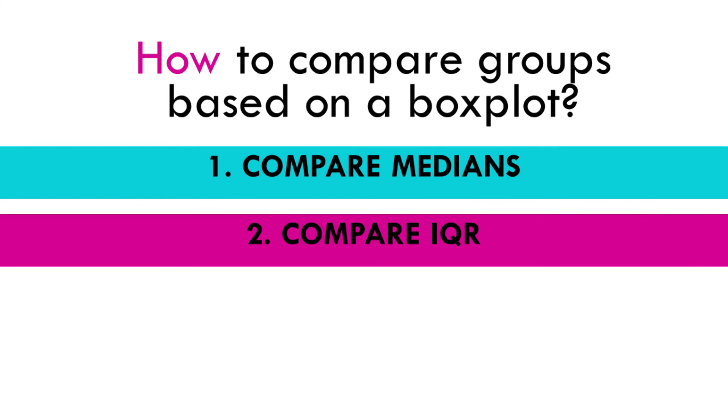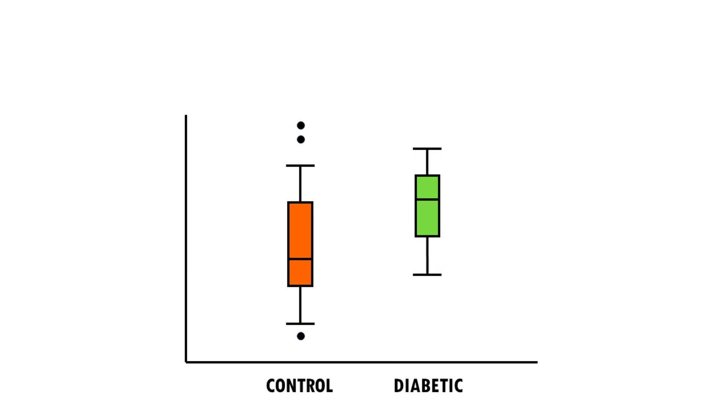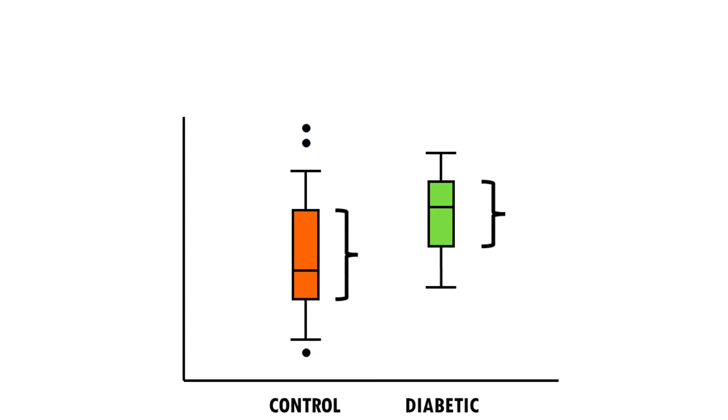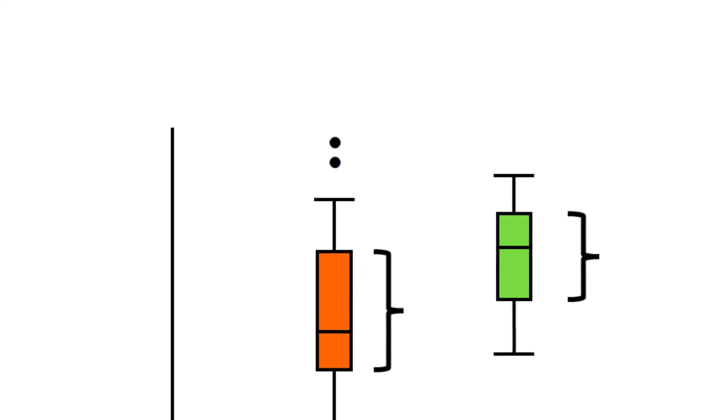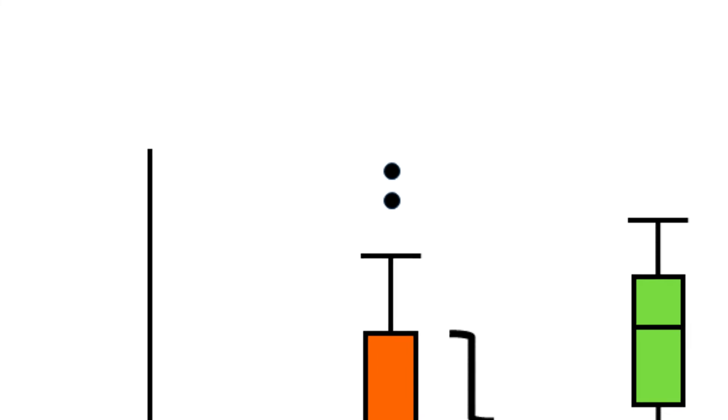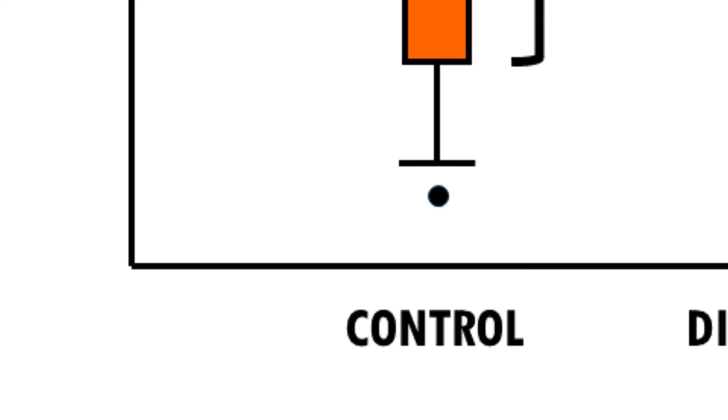So we can also compare the interquartile ranges, so the box lengths, to examine how the data is dispersed between each sample. The longer the box, the more dispersed the data is. The smaller, the less dispersed the data is. So the spread of the data is higher in control mice, as we can see from the size of the box, which is basically the interquartile range. And we can also look at the overall spread as shown by the extreme values at the end of the two whiskers. This shows the range of scores, which is another type of dispersion. Larger ranges indicate a wider distribution, that is more scattered data.